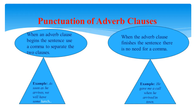An adverbial clause is a dependent clause that functions as an adverb — that is, the entire clause modifies a verb, an adjective, or another adverb. As with all clauses, it contains a subject and a predicate, though the subject as well as the predicate verb may sometimes be omitted and implied. An adverbial clause is fronted by a subordinating conjunction, sometimes called a trigger word. According to Sidney Greenbaum and Randolph Quirk, adverbial clauses function mainly as adjuncts or disjuncts, which also perform in a sentence as adverbial phrases or adverbial prepositional phrases. Unlike clauses, phrases do not contain a subject and predicate — they are contrasting.